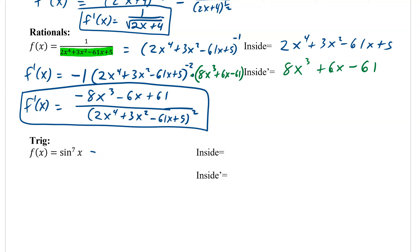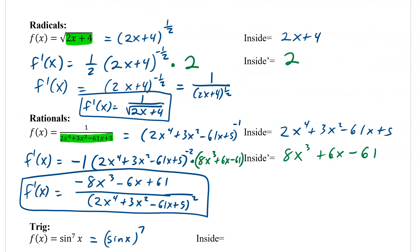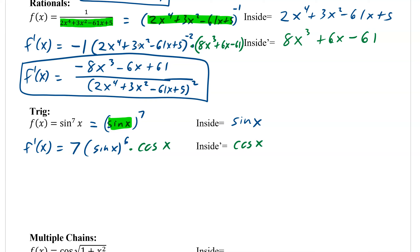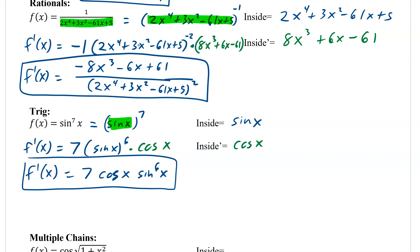With trig functions that have an exponent, you need to rewrite them. Rewriting puts a parenthesis on it, which shows you what the inside is. So by rewriting sin⁷x, we can see the inside is sine x. Now our derivative f prime of x equals 7 sine x to the power of 6, then multiply by the derivative of the inside — derivative of sine is cosine x. So f prime of x equals 7 cosine x times sine x to the sixth. You really do want to put that 6 back on the sine to get the correct form.